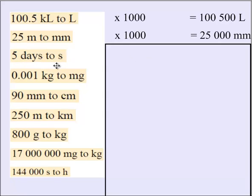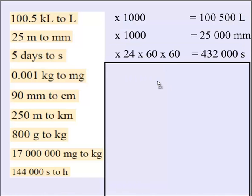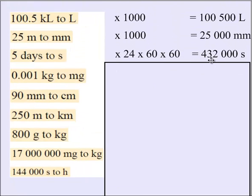All right, five days to seconds. We can't use King Henry because it only works with the metric system. Days to seconds. So we're going from days. So we're going to multiply by 24, then by 60, then by another 60. So times 24 times 60 times 60 gives you 432,000 seconds.